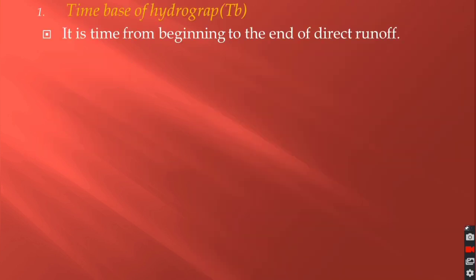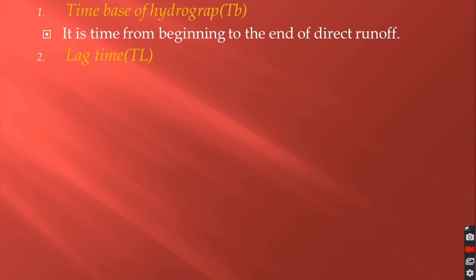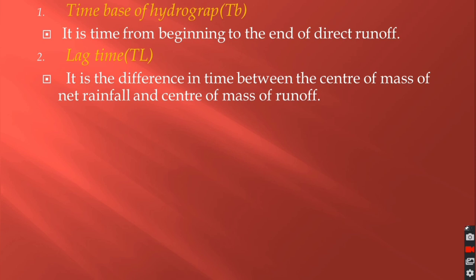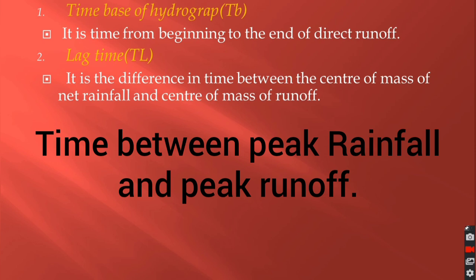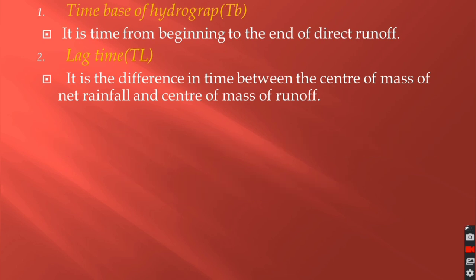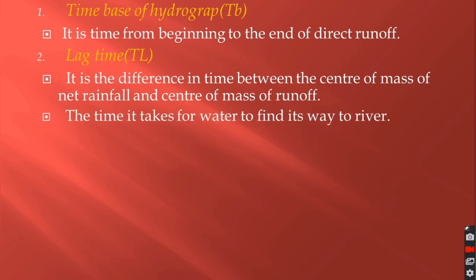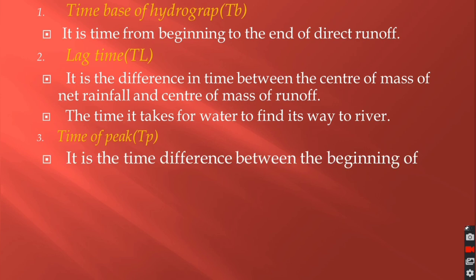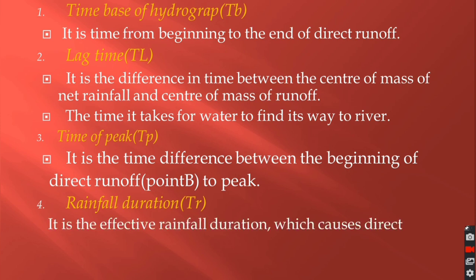The time base of a hydrograph is the time from the beginning to the end of direct runoff, from point B to point E. Lag time is the difference in time between the center of mass of net rainfall and the center of mass of runoff — essentially the time between maximum rainfall and maximum runoff. Time to peak is the time difference between the beginning of direct runoff at point B and the peak flow. Rainfall duration is the effective rainfall duration which causes direct runoff.